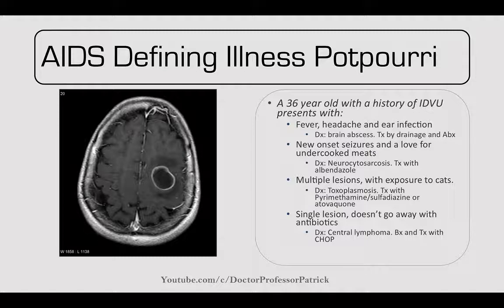Multiple ring-enhancing lesions on CT would suggest toxoplasmosis. Treat with pyrimethamine and sulfadiazine or atovaquone. If there is a single ring-enhancing lesion that does not go away with antibiotics, think of CNS lymphoma — you would need a brain biopsy and treat with CHOP.